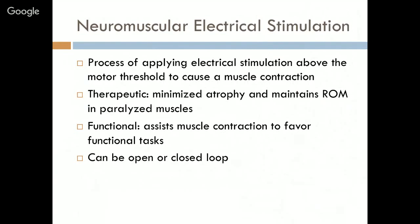Neuromuscular electrical stimulation (NMES) is the process of applying electrical stimulation above the motor threshold to cause a muscle contraction. It can be therapeutic — to minimize atrophy and maintain range of motion in paralyzed muscle — or functional, assisting muscle contraction to support functional tasks such as walking in foot drop. This can be an open-loop system, where stimulation is triggered manually, or a closed-loop system, which uses automated technology with electrodes and sensors to detect the gait cycle and activate stimulation based on how the patient moves their extremity.